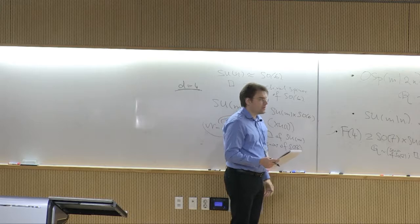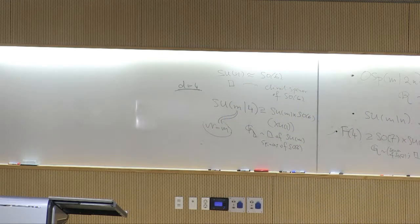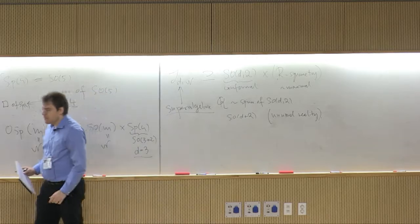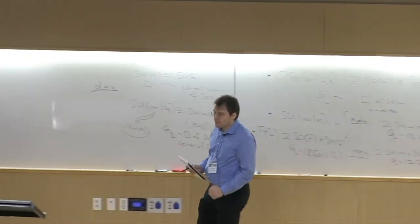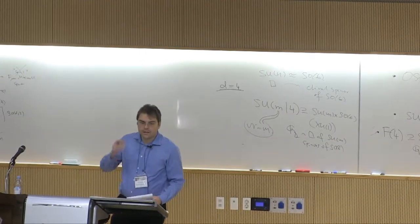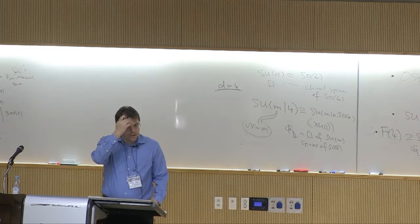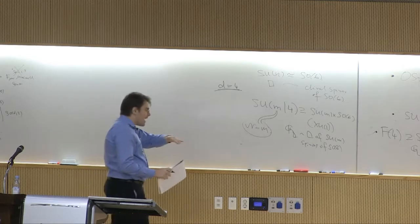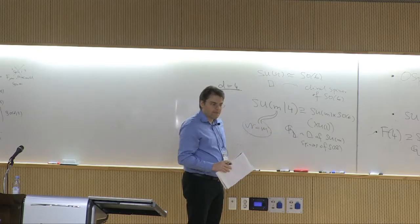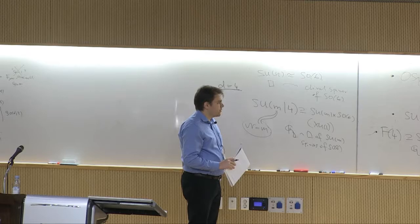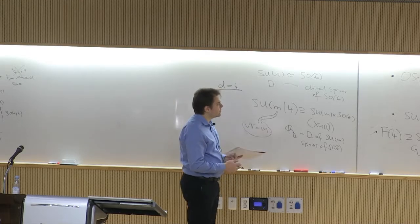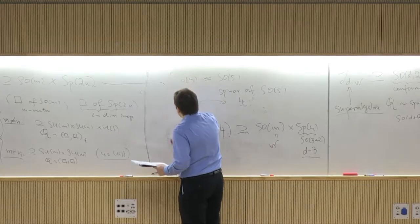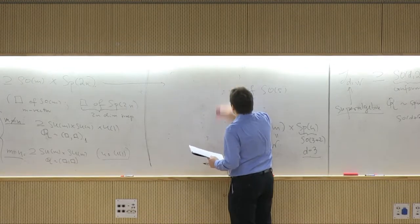For six dimensions the SO group we want is SO(8), which unfortunately has no exceptional isomorphisms to other Lie algebras. But SO(8) has one more miraculous property: it enjoys a triality outer automorphism — an S3 symmetry that permutes its three eight-dimensional representations: the vector and the two chiral spinors 8S and 8C. This triality is the last dimension where anything exceptional happens; beyond six dimensions there is no more magic to guarantee the existence of superconformal algebras.